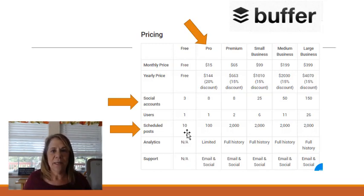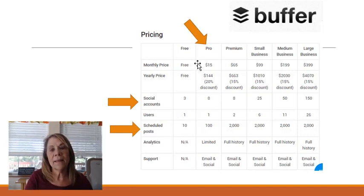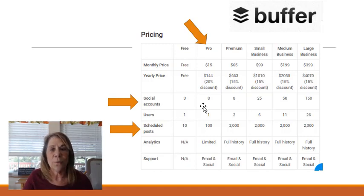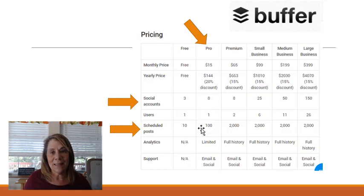Ten posts a month is not going to do you any good — you might as well be scheduling daily because you'll be getting on there every other day scheduling those nine posts we just talked about. Personally, I think the pro account looks better because you can connect up to eight different social accounts, and if you go down, you can schedule a hundred posts. You could probably schedule six weeks out — if you're doing nine posts, four on Facebook and five on Instagram — and get that knocked out.